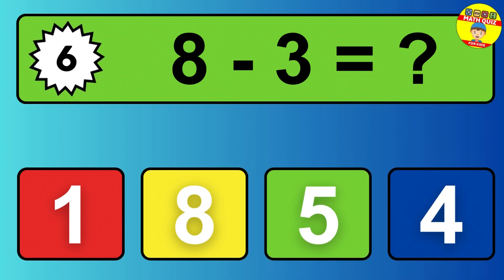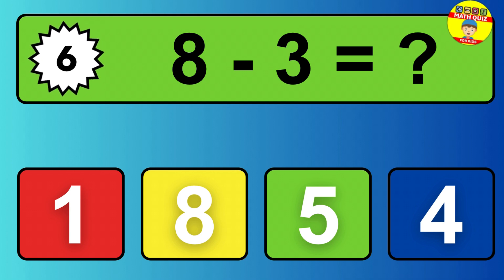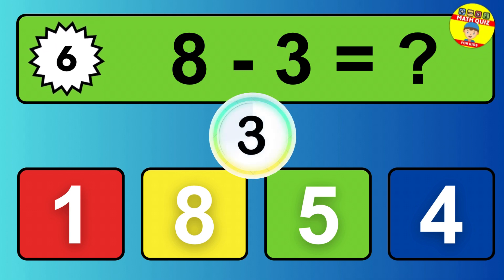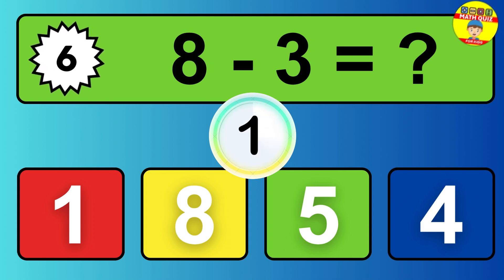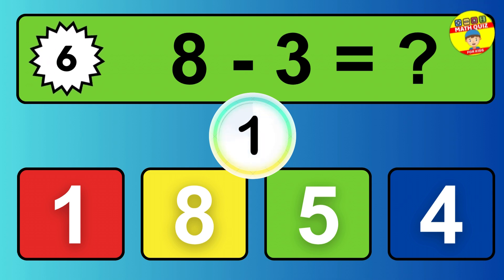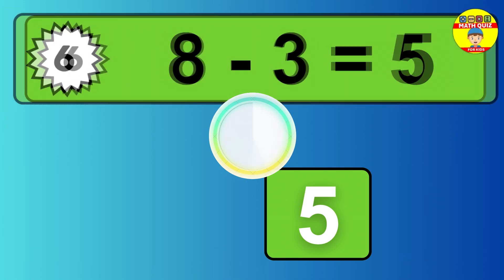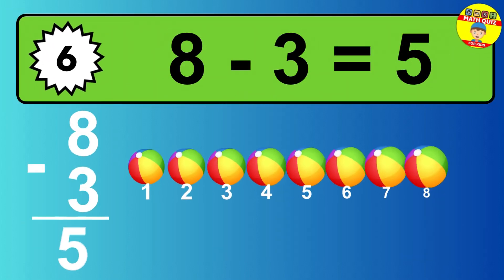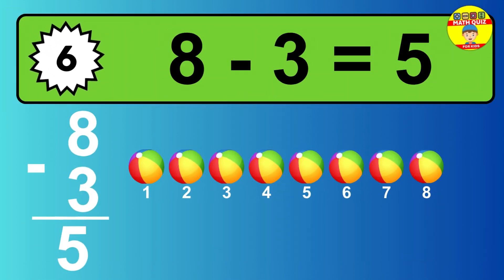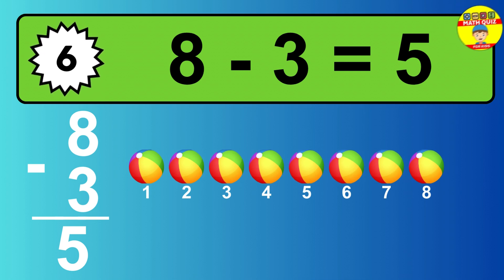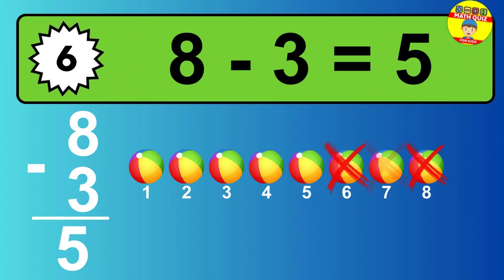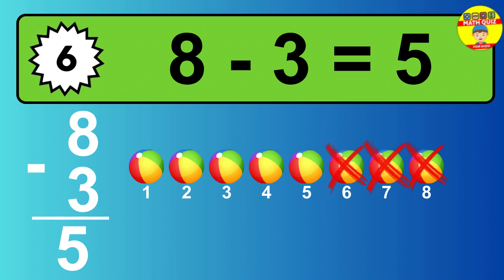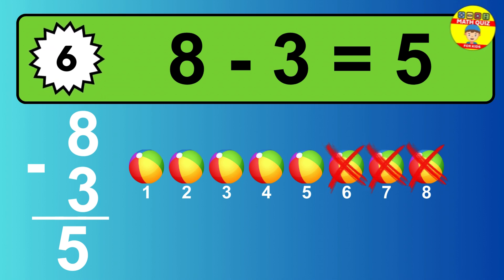Question six. Eight minus three equals what? So the answer is, eight minus three is five. Let's count it. One, two, three, four, five.